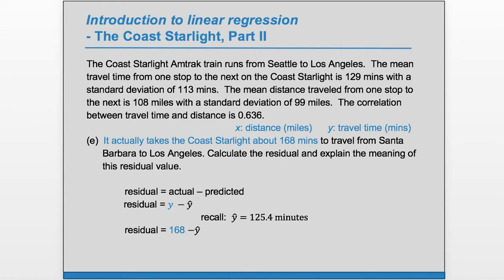And y is the actual value, and that's given to us in part E as 168. So 168 is the actual y, 125.4 is the predicted y, and we take this difference and we get a residual of 42.6 minutes.